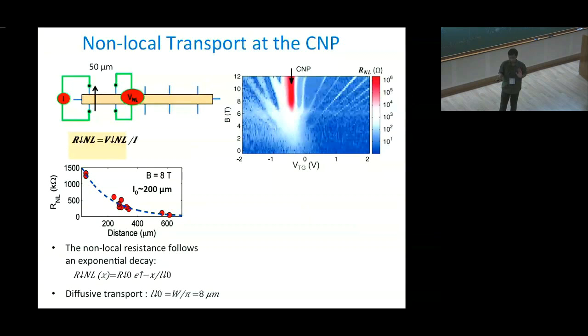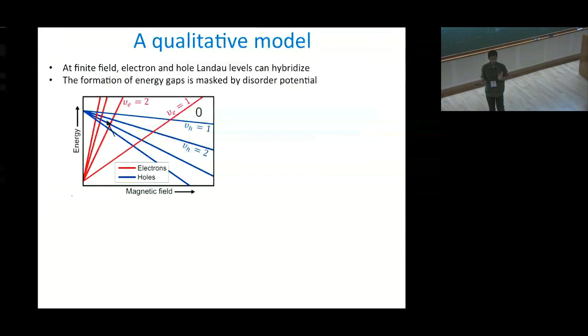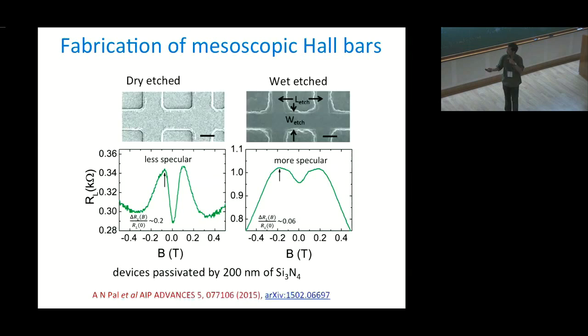The main conclusion is that at high magnetic field, at the charge neutrality point, an edge channel is generated, and this edge channel is helical. This is completely different from the topological insulator, which happens at zero magnetic field. This can be explained using the hybridization between the electron and hole Landau levels.